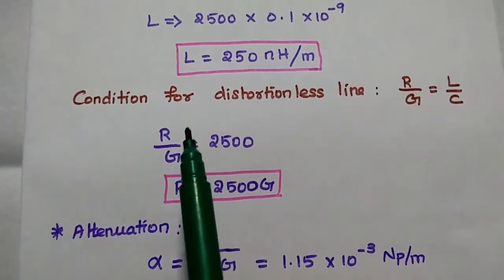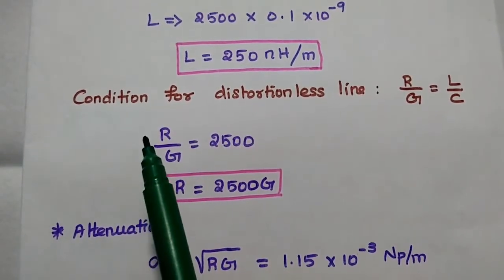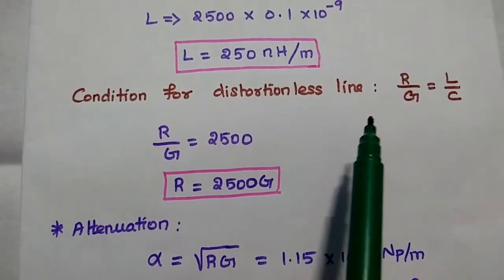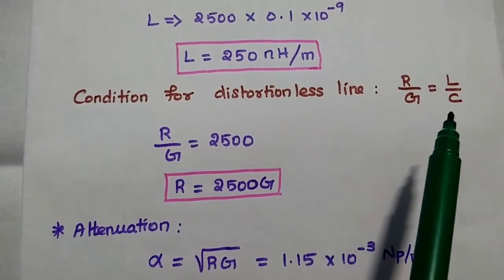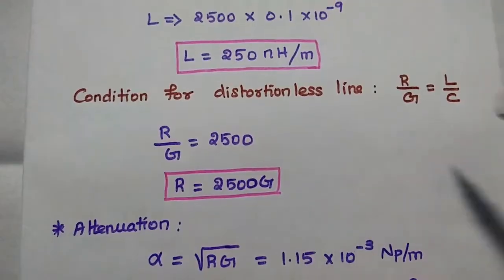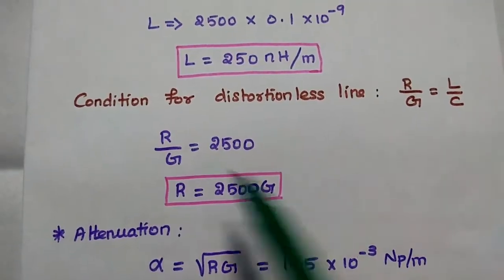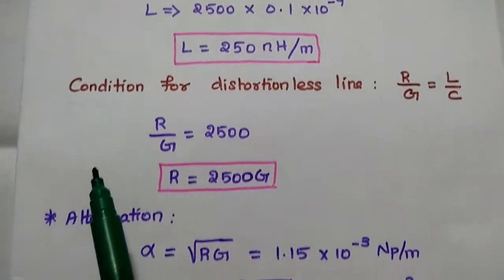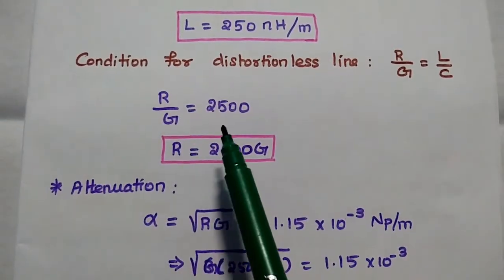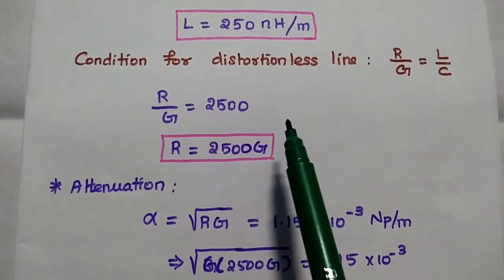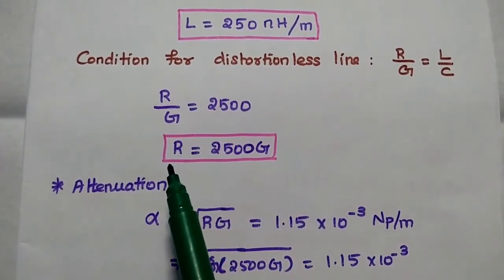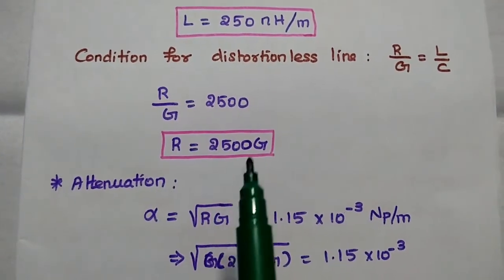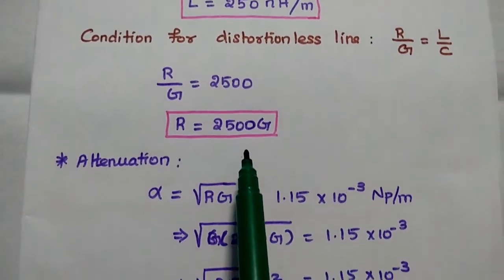Next, we are going to find out R and G values. For that, we use the condition for distortionless line: R by G is equal to L by C. The L by C value is 50 squared, that is 2,500. So R by G equals 2,500. Moving G to the right-hand side, R is equal to 2,500 G.